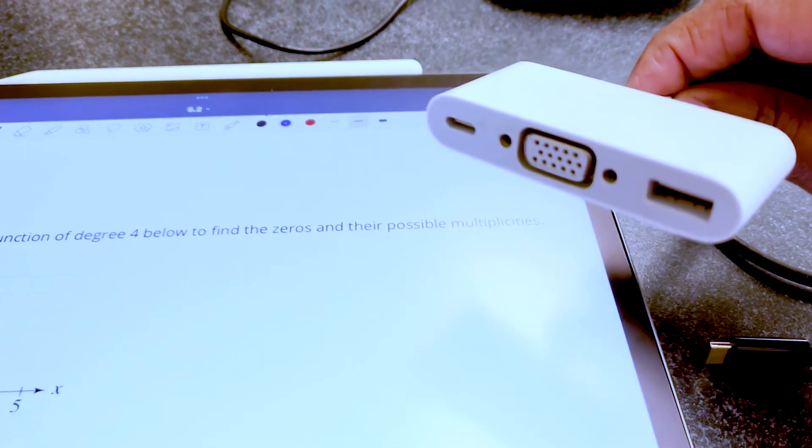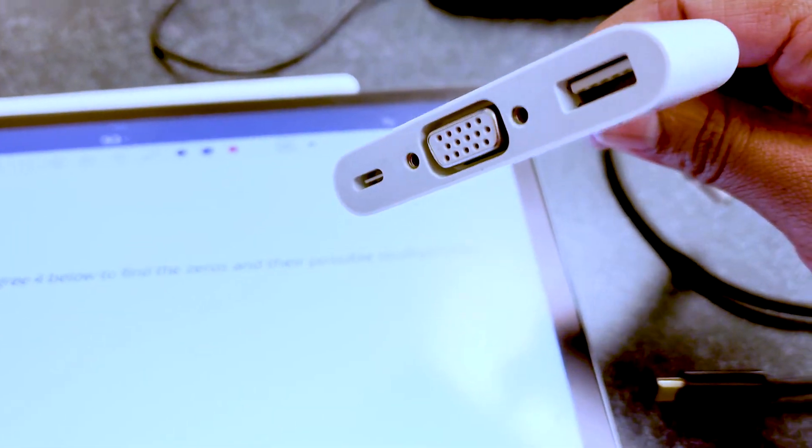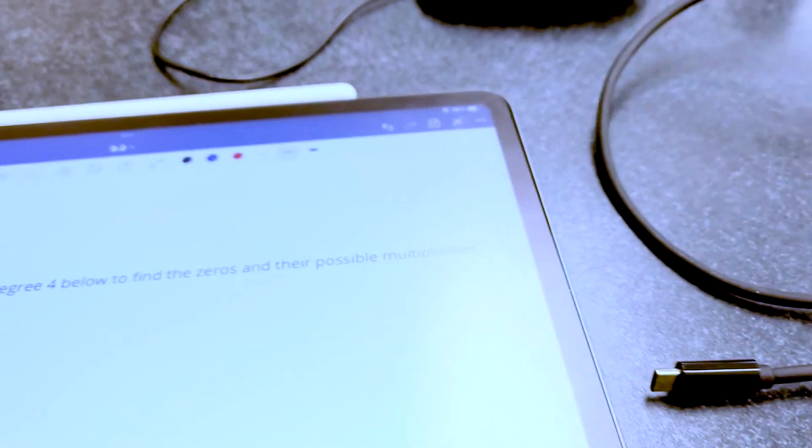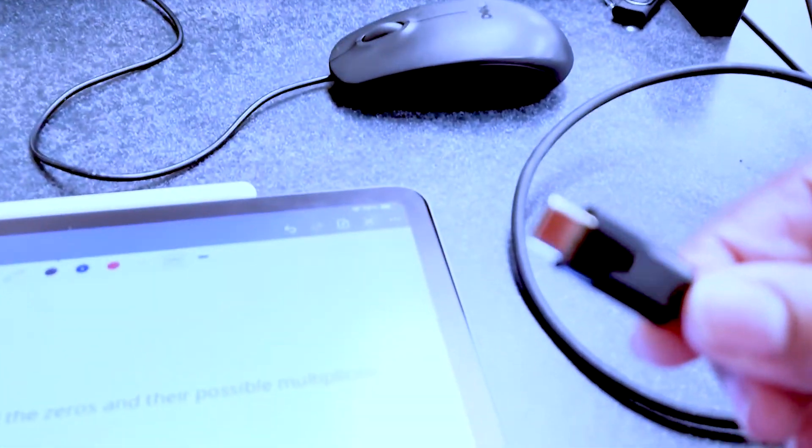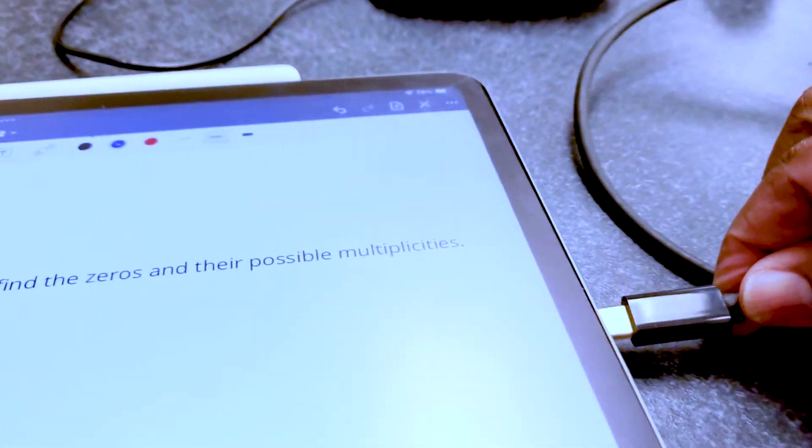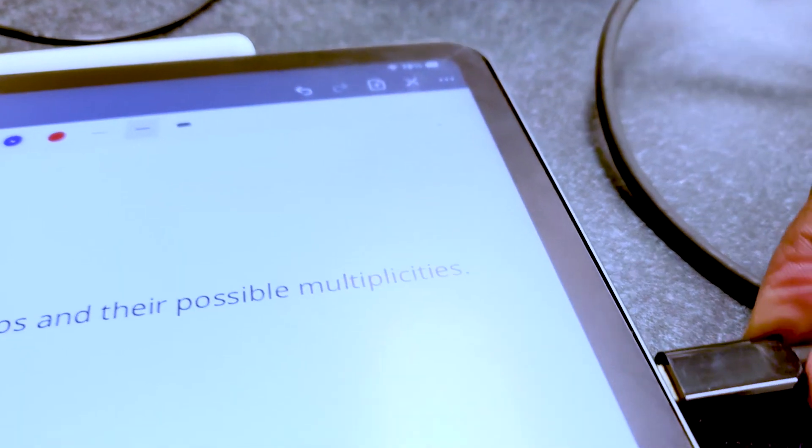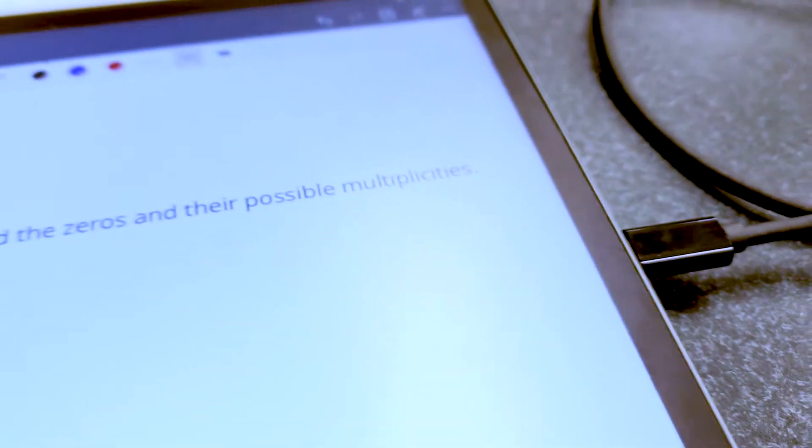Now to connect your iPad to the projector, you need a VGA to USB-C or you need an HDMI to USB-C right here. Let me go ahead and connect the USB-C into my iPad port. Give it a second and then you will see it will automatically pop up on the screen.